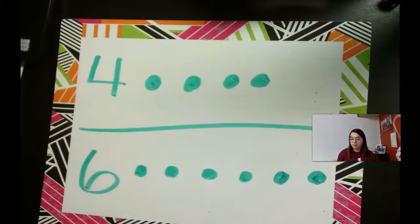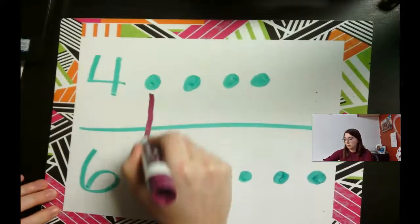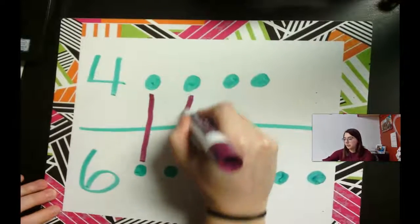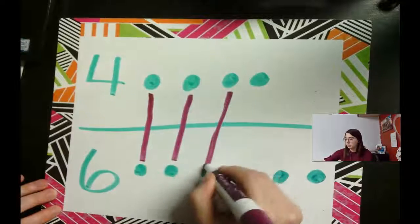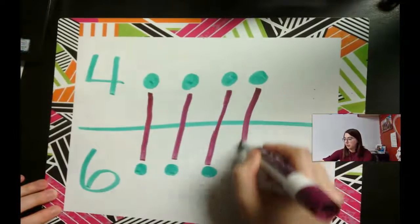So six must be more. To double check, we'll do partners. Here's a partner. Here's a partner. Here's a partner. And here's a partner.